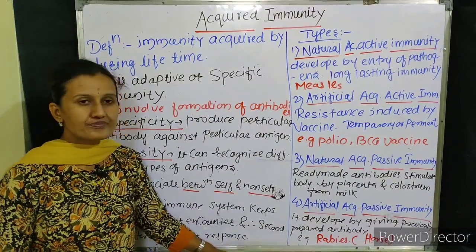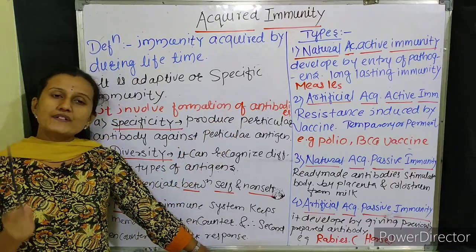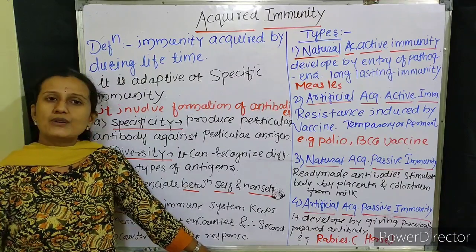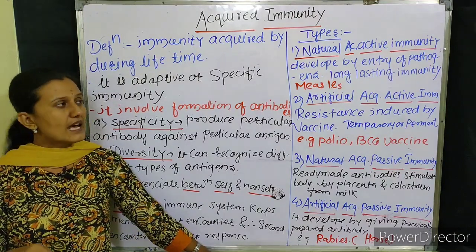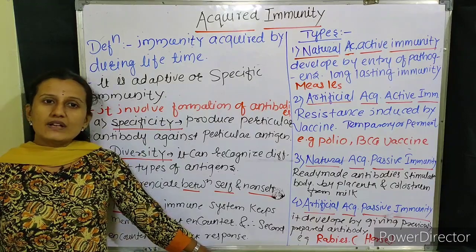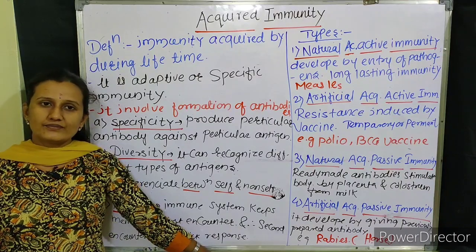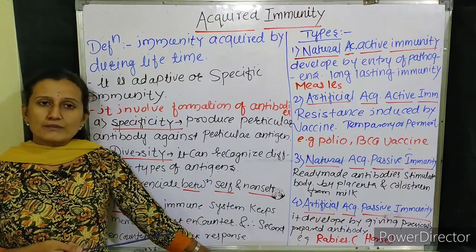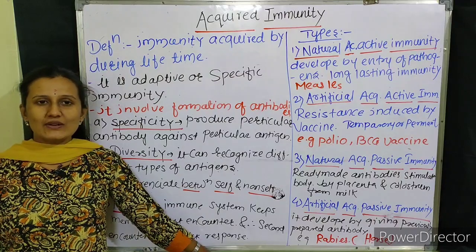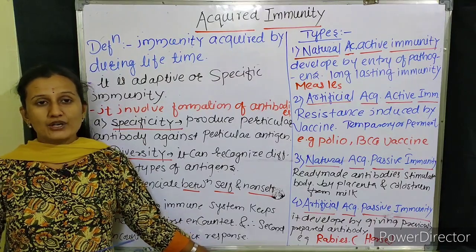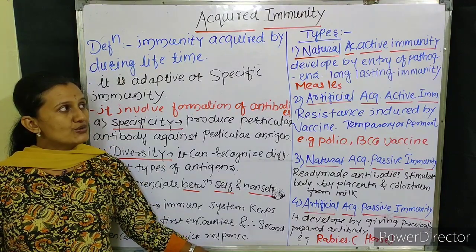Natural acquired active immunity is developed after the entry of a pathogen, after the entry of a particular antigen. When any antigen enters the body of the organism, then the immunity develops naturally — that is called natural acquired active immunity. This immunity is long-lasting. For example, when measles occurs for the first time, that pathogen enters our body and our body gains information about it and learns how to fight with it — that is natural acquired active immunity.